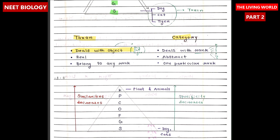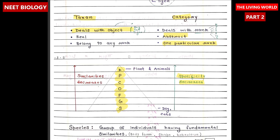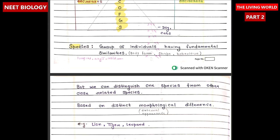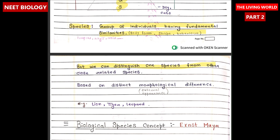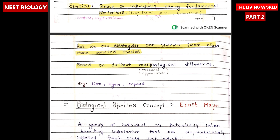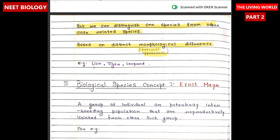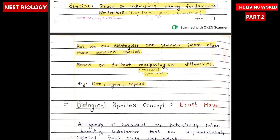A category, on the other hand, is an abstract concept that deals with rank or level within the hierarchy, such as species, genus, or family itself. Now let's discuss these categories individually. Species is a group of individuals having fundamental similarities — body form, shape, behavior — but we can distinguish one species from another closely related species based on distinct morphological differences such as external appearance. For example, lion, tiger, and leopard.